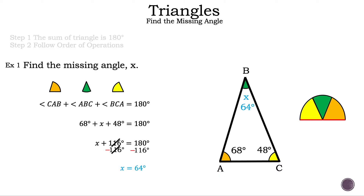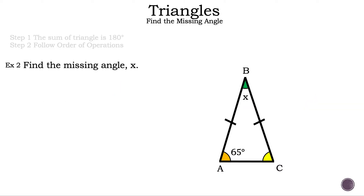That is example one. Now let's move on to example two. Let's read the question: find the missing angle X. Let's take a look at this triangle. They only gave us one measurement: 65 degrees.